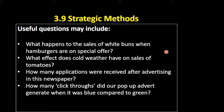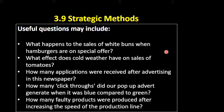We might ask: how many click-throughs did our pop-up advert generate when it was blue compared to green? We can look at the effectiveness of different colours or even different words in an advert — using this different word got us 50% more interest in our product. How many products were produced after we increased the speed of the production line? All of these questions can be answered through data mining to enable us to make better decisions in the future.